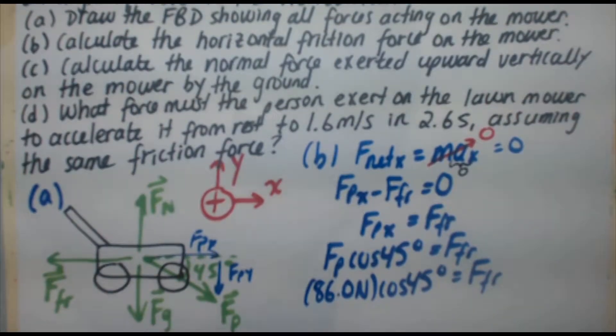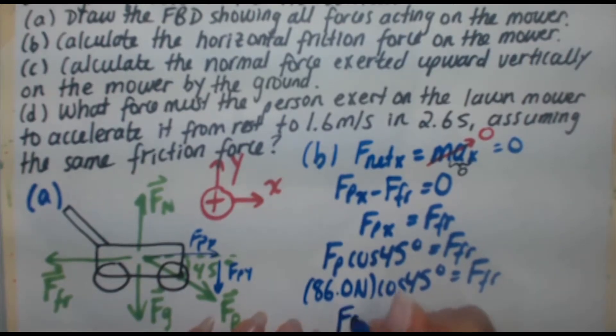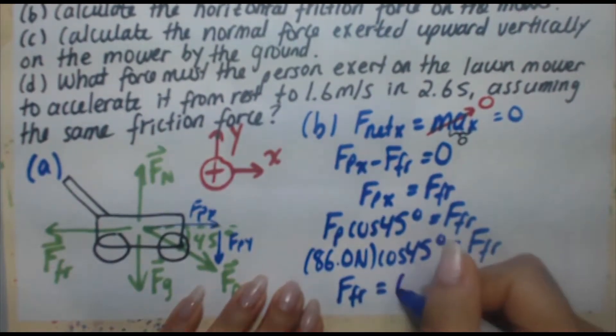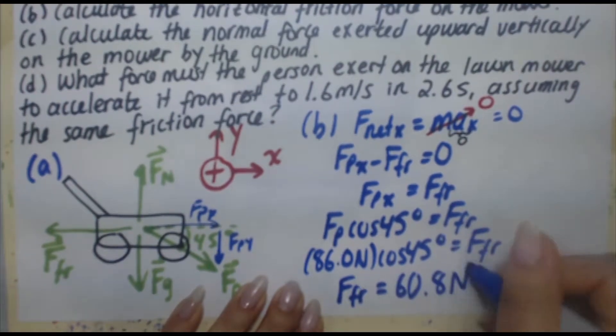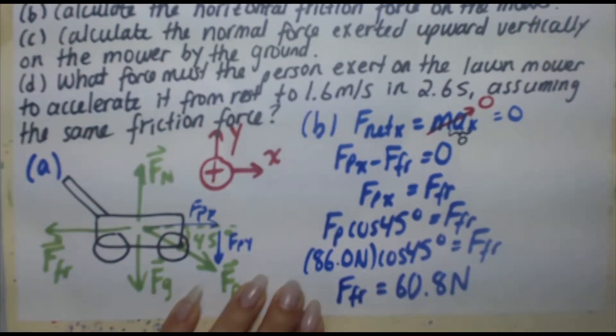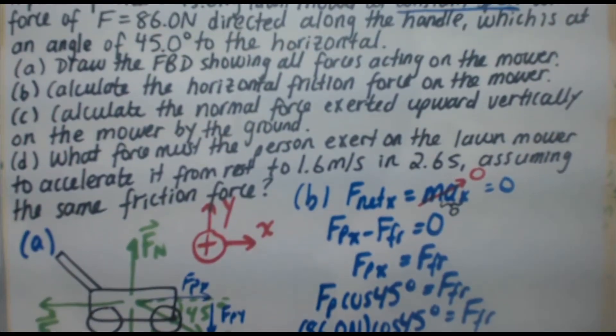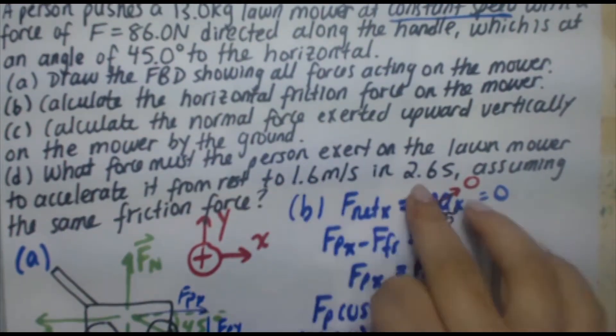Okay, so all you need to do is plug that into your calculator. And you end up with force of friction equals, the number you get out is 60.8 Newtons. And that is correct to the number of sig figs, or rather, actually. In the last part, we're given the 1.6, 2.6.